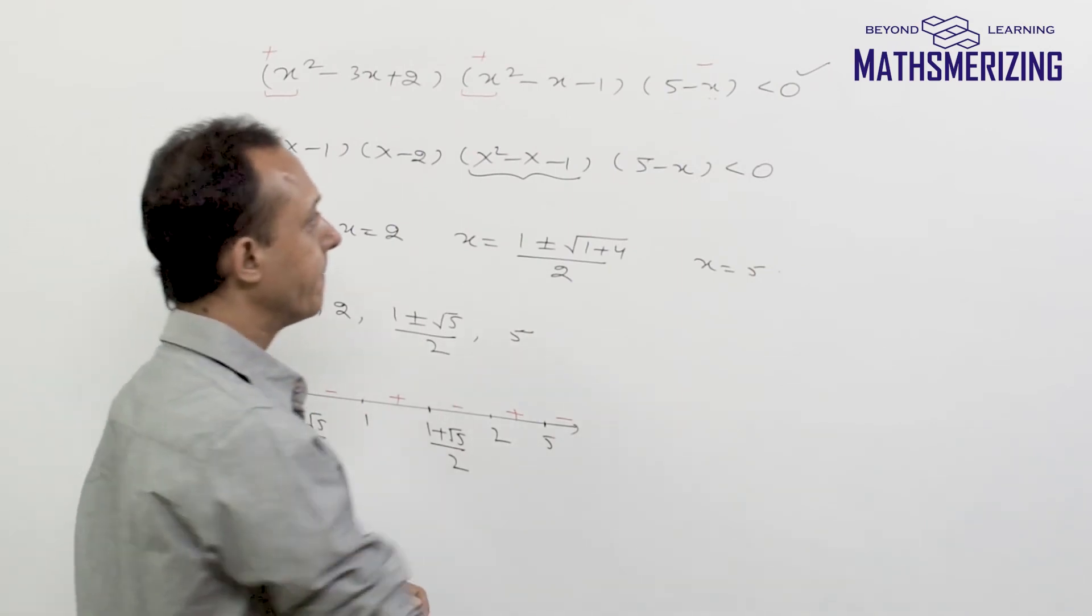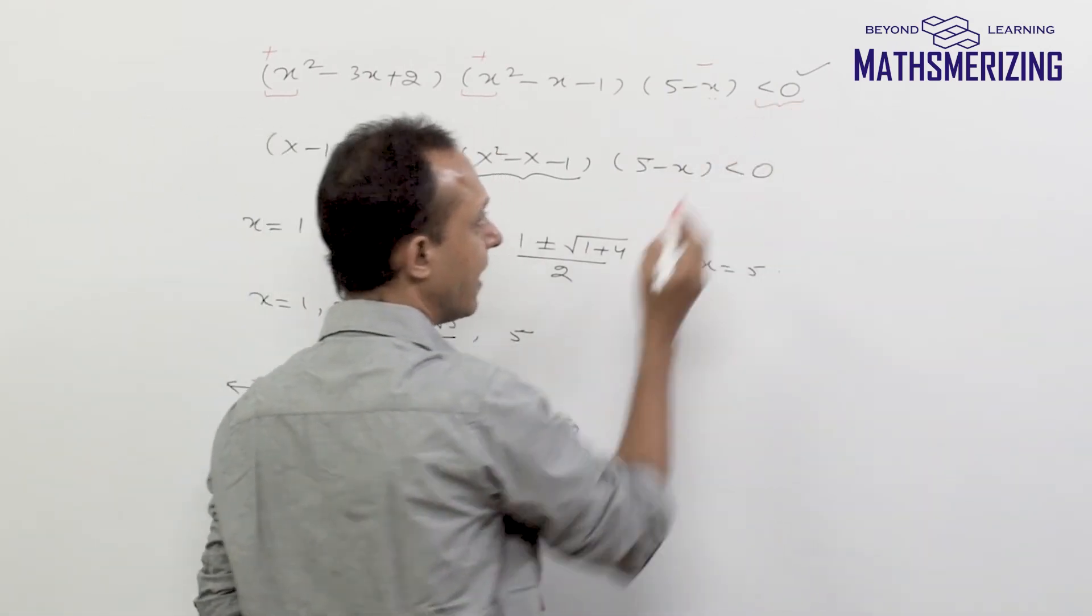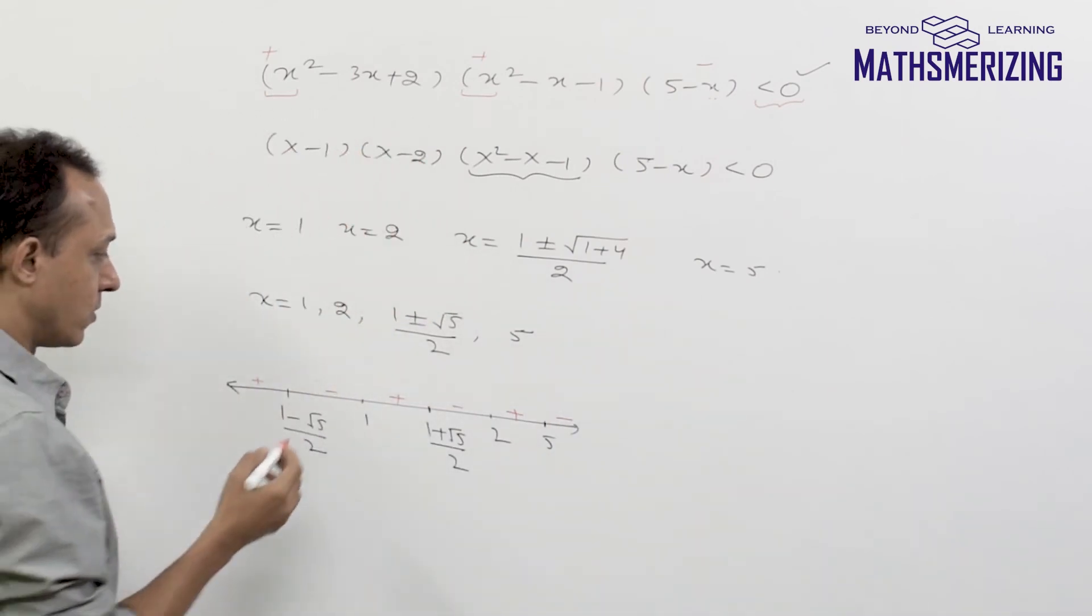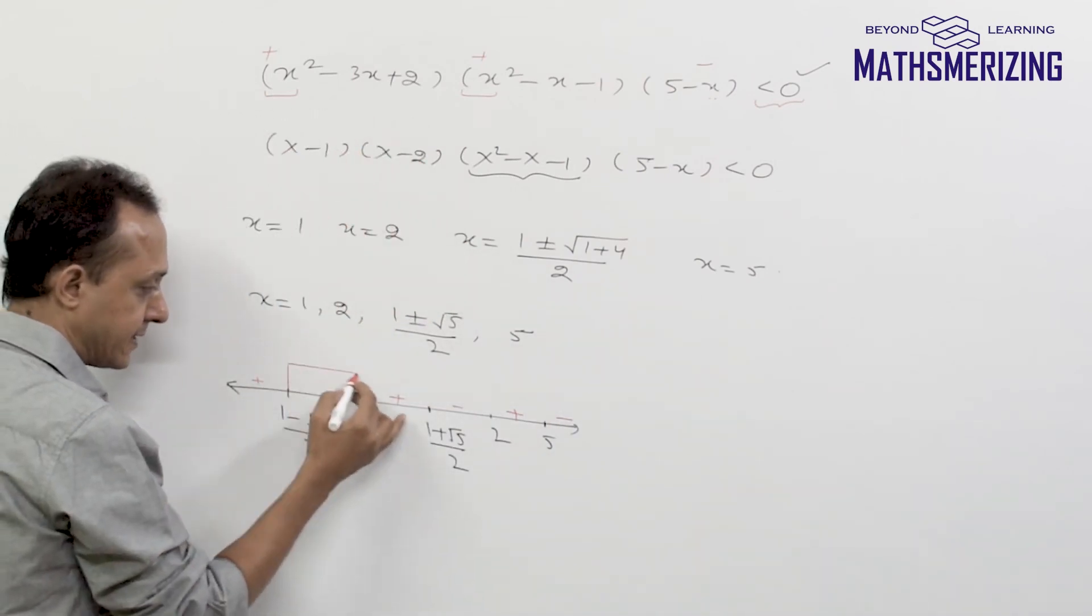Now what do I need? I need less than zero, and less than zero is negative. So I need to find negative. So negative lies here.